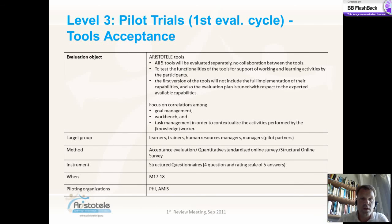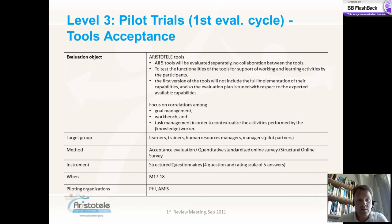Level three, the pilot trials, will focus on evaluating all five tools separately — not in an integrated Aristotle platform — to test the functionalities of the tools for support of working and learning activities by participants. The first version of the tools will not include the full implementation of their capabilities, so the evaluation plan is tuned to the expected available capabilities when they are ready. This will happen in months 17 and 18. Learners, trainers, human resource managers and managers are in the focus of the evaluation. It is an acceptance evaluation through a quantitative standardized survey.